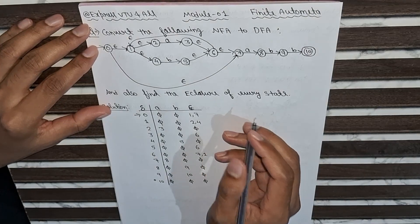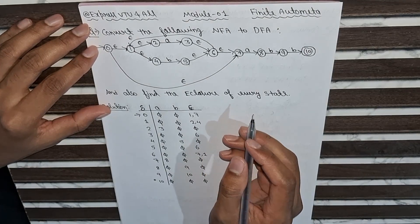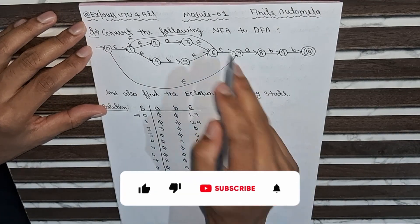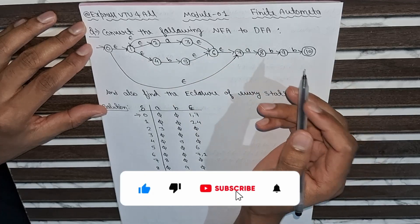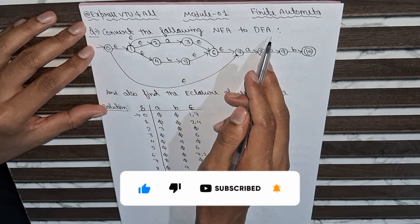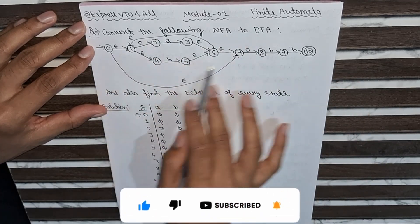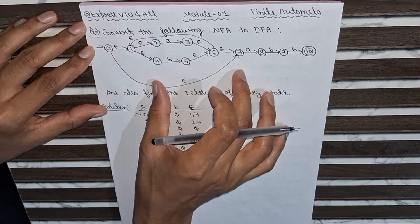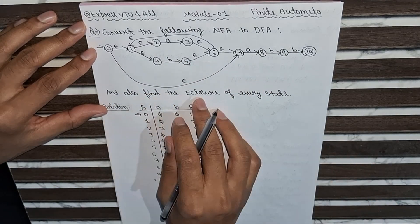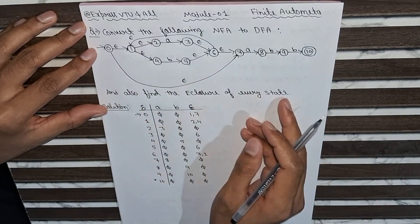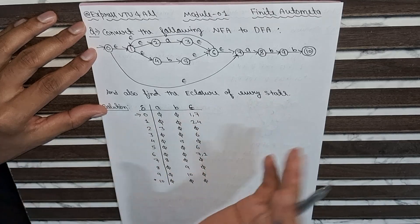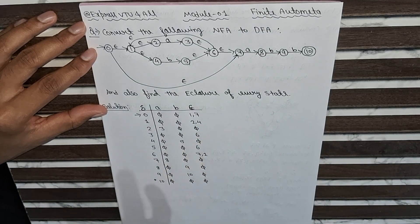Hello everyone, welcome back to Express Video For All. Today we are going to solve a very important question from Module 1, Finite Automata. In this question, we have to convert the following NFA to DFA. We also have to find the e-closure of every state. E-closure was discussed in the previous video, you can check there.